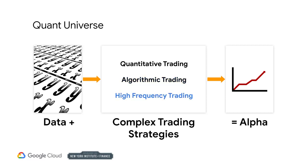High-frequency trading is a subset of algo trading and focuses on the rapid execution of short-term trading strategies at the millisecond and sub-millisecond timescale. We base our high-frequency trading strategies on quant models of market microstructure features, such as liquidity and latency, which we will talk about in a later section covering arbitrage strategies.